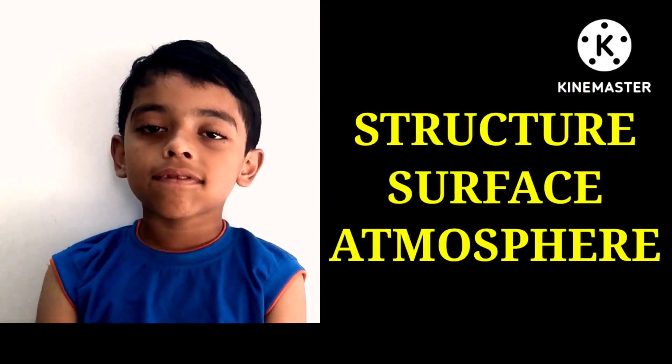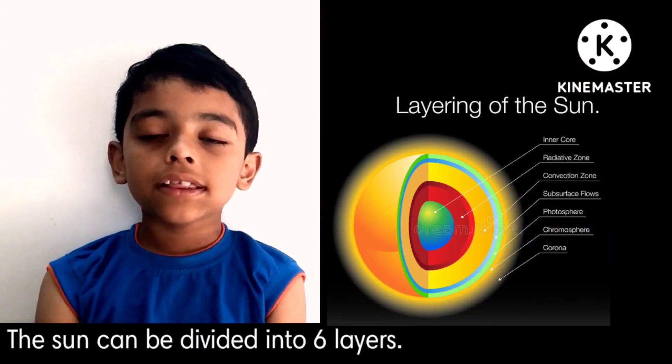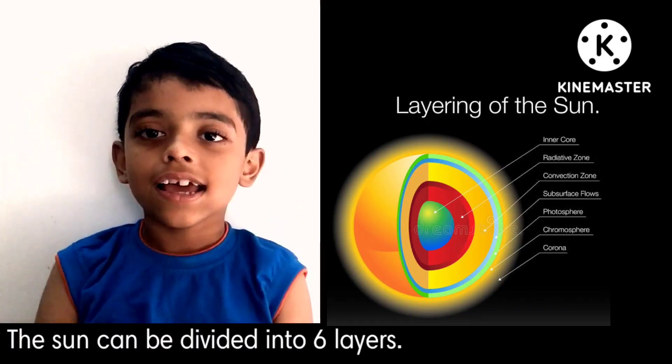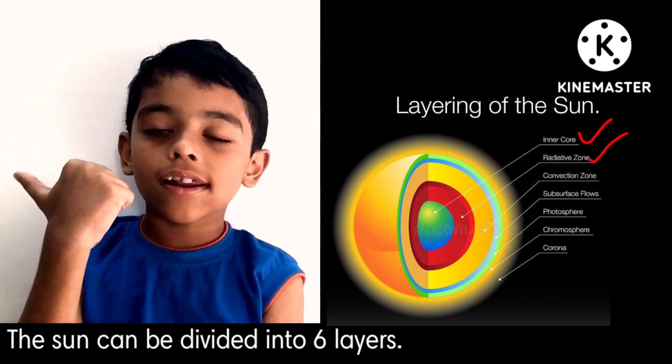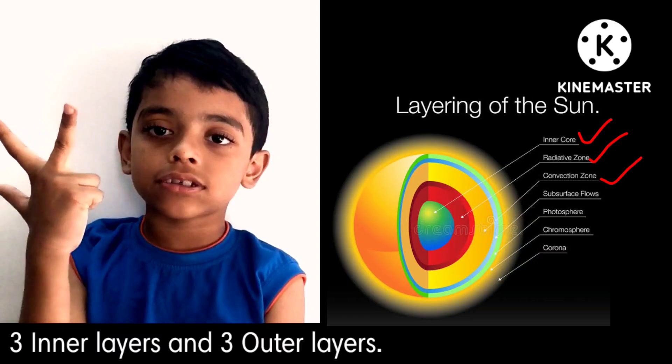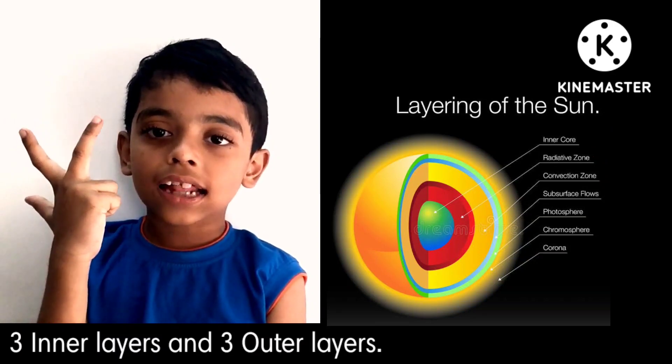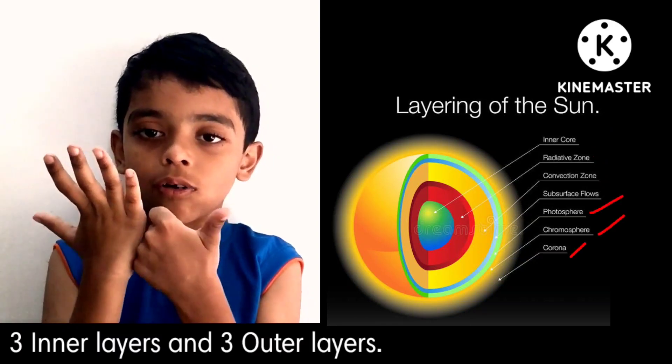Structure, Surface and Atmosphere: The Sun can be divided into six layers. The inner layers are the core, radiative zone and convection zone. The outer layers are the photosphere, the chromosphere, and the corona.